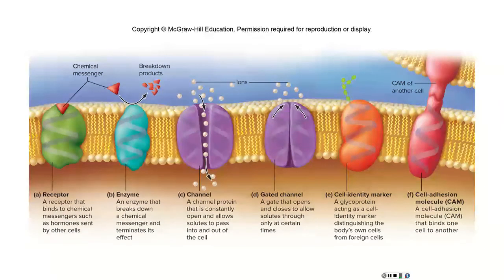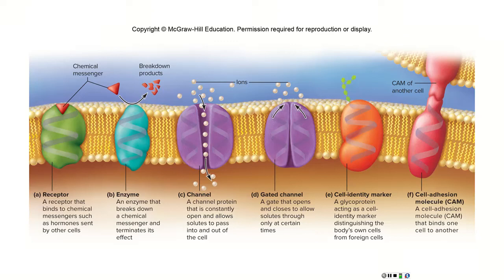Proteins, as we discussed in Chapter 2, are very broad as far as what they can do — the most prolific in terms of jobs. That was because they come in so many different shapes, and it was all about shape when we talked about proteins. That's no different for proteins that are part of the cell membrane. For example, over here on the left, one thing they could do is act as a receptor. When we get to the endocrine system, hormones will come along and communicate with a cell by attaching to a membrane protein — if the shape fits, it attaches and we get some form of communication.